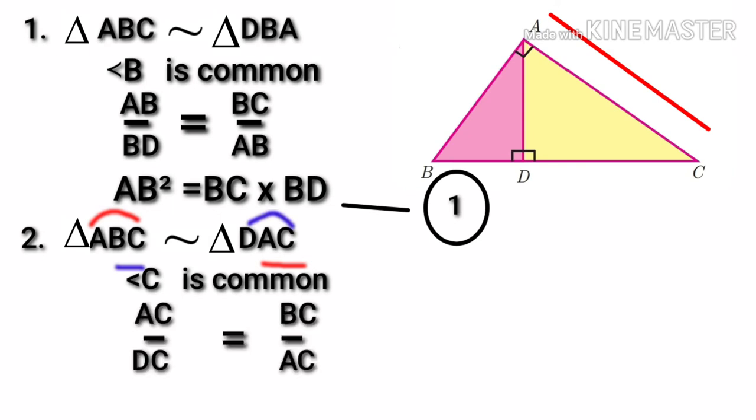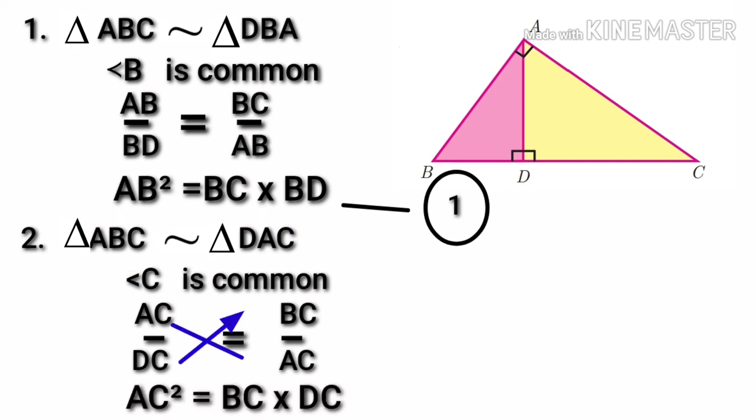AC by DC is equal to BC by AC. When cross multiplying, AC square is equal to BC into DC. Let us take this as second equation.